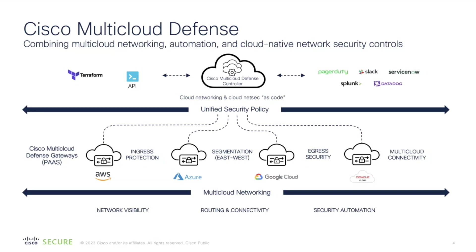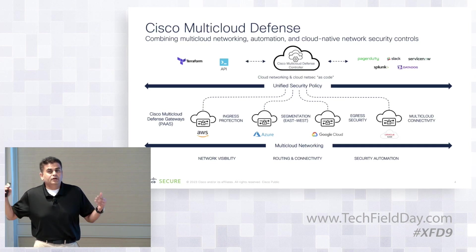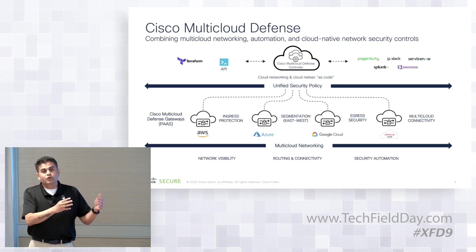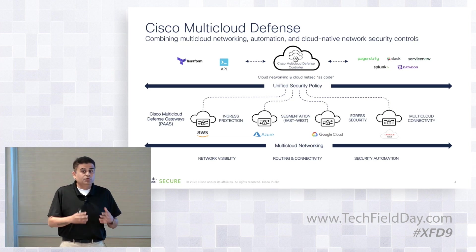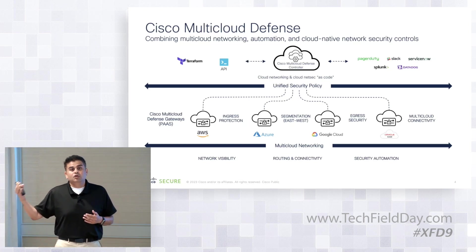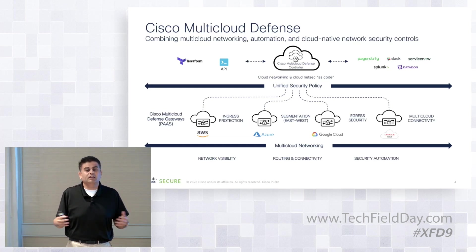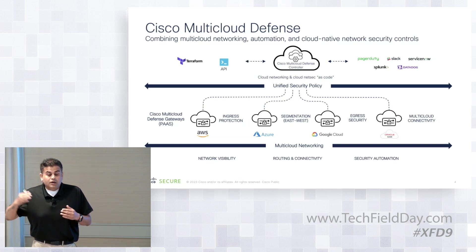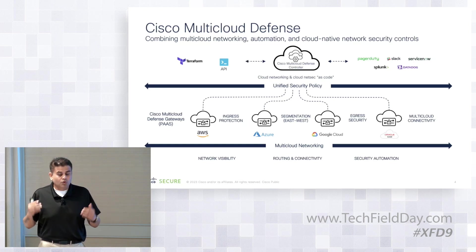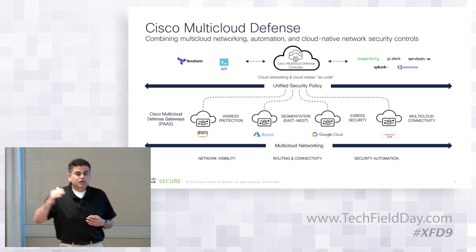In terms of automation and orchestration, we touch various points like network visibility. When you run this solution, the first thing you will do is onboard your cloud infrastructure into the SaaS portal. The moment you enable that integration between the controller and your cloud infrastructure, we learn about your VPCs, your assets, your EC2 instances, your transit gateways, gateway load balancers, and network security groups — all in a secured way using IAM policy. We then display that information on a single dashboard covering AWS, Azure, GCP, and OCI.